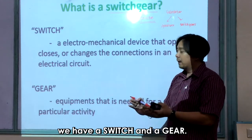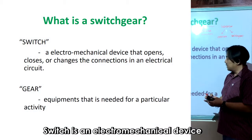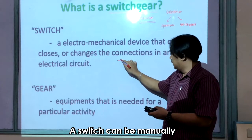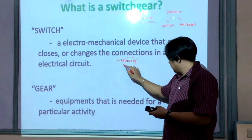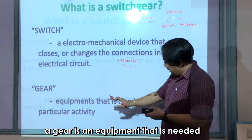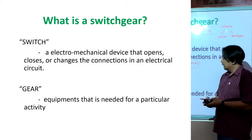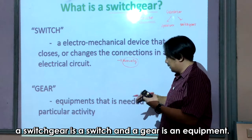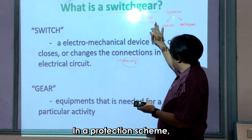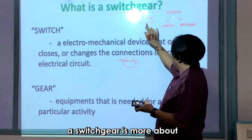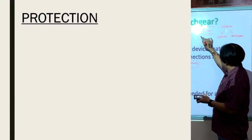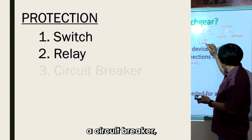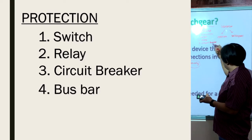From the word itself, we have a switch and a gear. A switch is an electromechanical device that closes or changes the connection to the circuit, and a switch can be manually used. A gear is equipment needed for a particular activity. So a switchgear combines a switch and gear — in a protection scheme, a switchgear consists of a switch, a relay, a circuit breaker, and a bus bar.